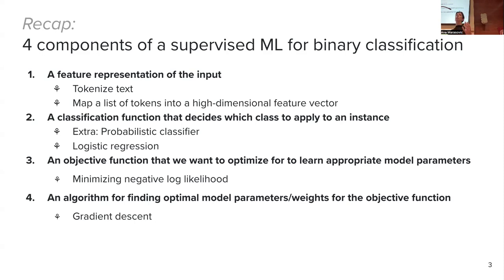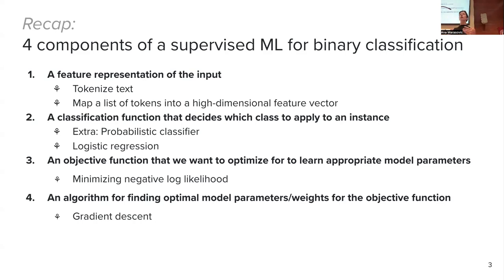The first component was a feature representation of the input, where we first tokenize text using a whitespace tokenizer — splitting our string into a list of words — then mapping this list of tokens into a high-dimensional feature vector, for example a vector of the size of the vocabulary counting whether each token was present. Once we have that, we defined a classification function deciding which class to apply — positive or negative — and I introduced a probabilistic notion inside this classifier, specifically logistic regression, which will also be a building block for neural networks.